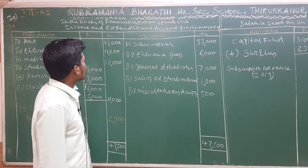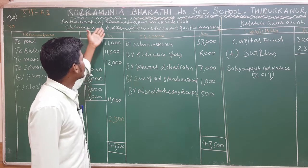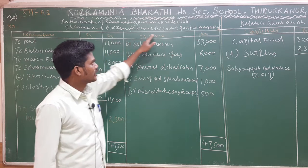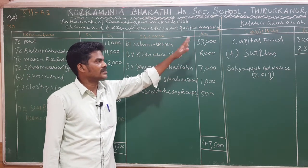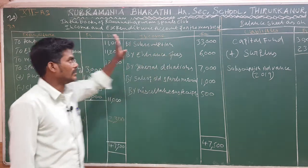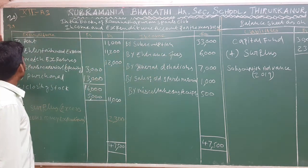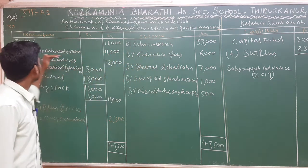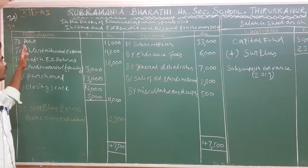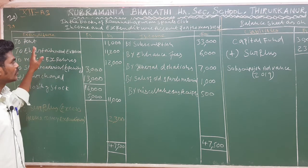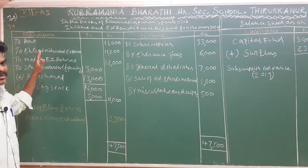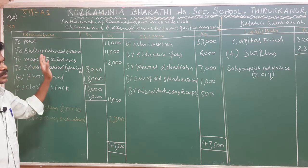In the books of Ramana Dhabaram Sports Club — income and expenditure account for the year ending 31st December 2018. Debit side is the expenditure side; credit side is the income side. We separate revenue expenditure and revenue income from capital expenditure and capital receipts.